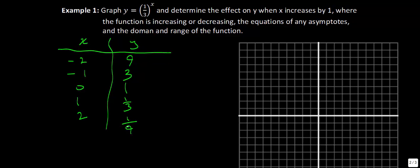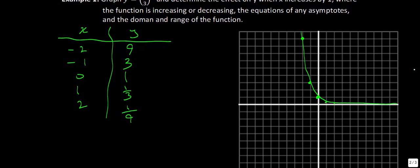Let's graph these points. At x equals negative 2, we have a point up at 9. At x equals negative 1, we have a point at 3. We have our y-intercept at 1 — no surprise there. Then approximately one-third at x equals 1, and one-ninth at x equals 2. In general, this function looks approximately like a decreasing exponential curve, and it's never going to cross the x-axis — it gets infinitely close to it.